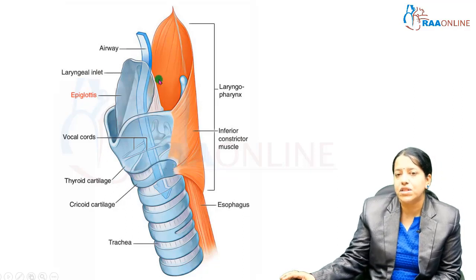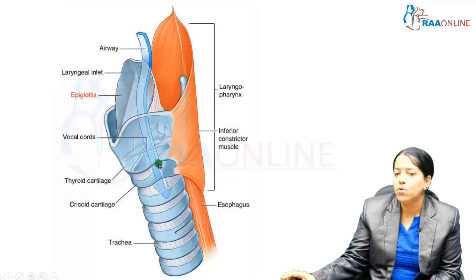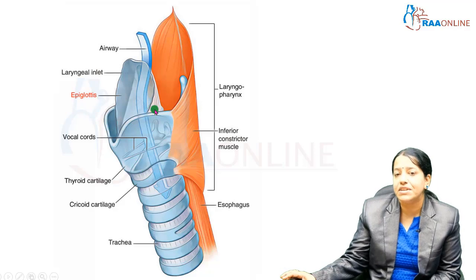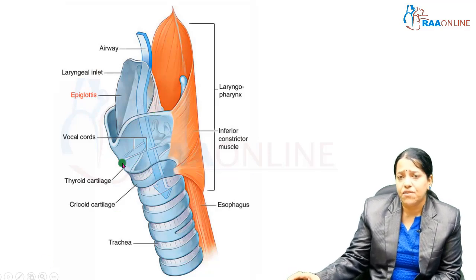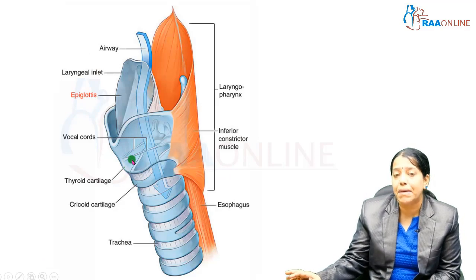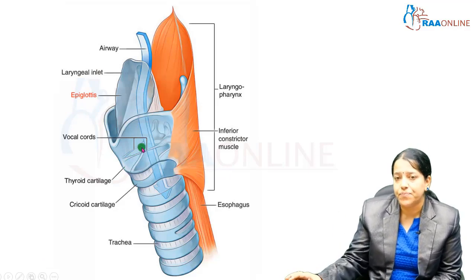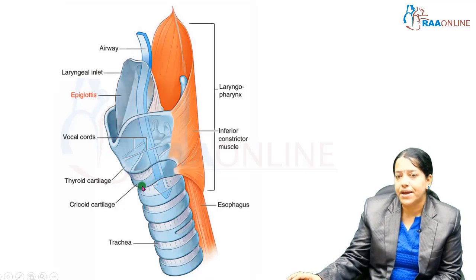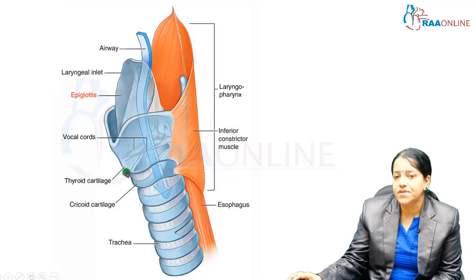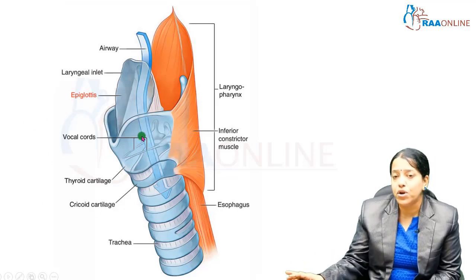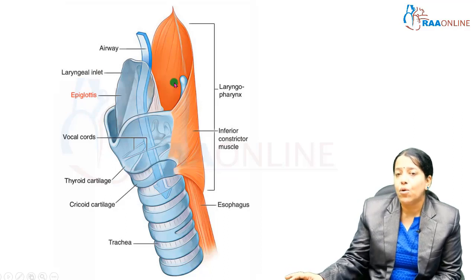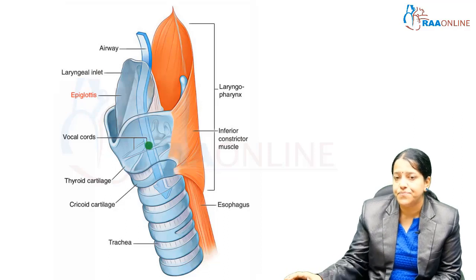The larynx is mainly made up of cartilages — all the blue structures in the diagram are cartilages. It also has intrinsic muscles intimately related to the cartilages, along with folds, ligaments, and membranes. All structures attach to these cartilages, and through vibration, pulling up and down, they help in phonation.